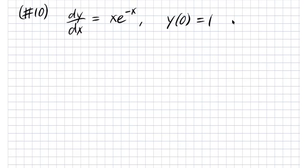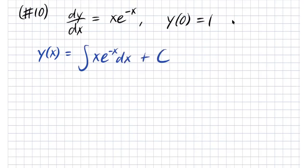Here's another example. This one is interesting because it will involve using integration by parts in order to get the solution of this differential equation. So y of x equals the integral of x times e to the (x minus 1) dx plus C.